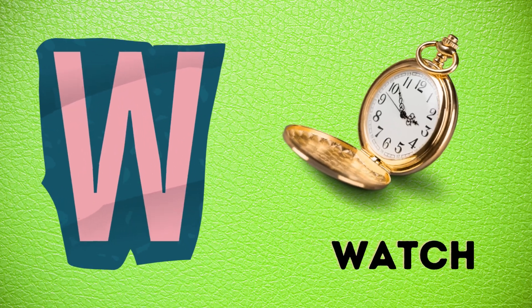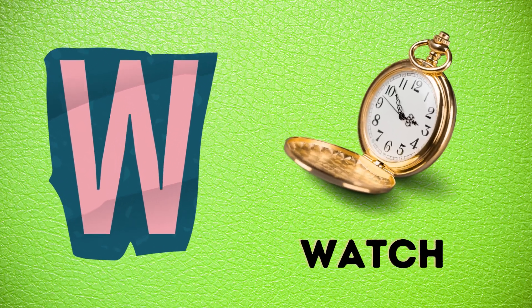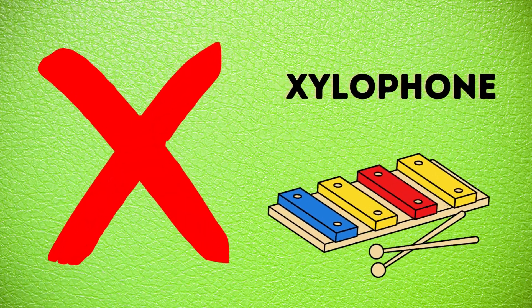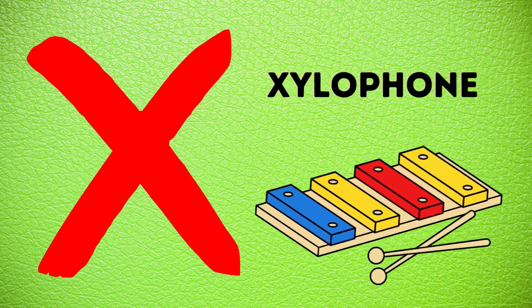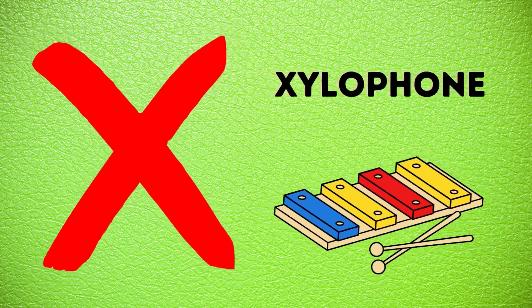W is for watch, w-w-watch. X is for xylophone, z-z-xylophone.